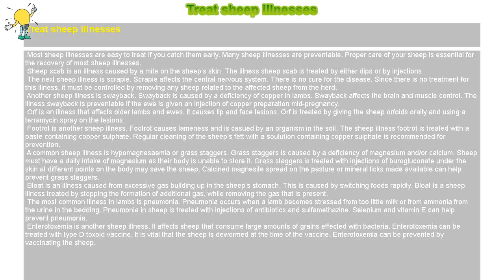A common sheep illness is hypomagnesemia, or grass staggers. Grass staggers is caused by a deficiency of magnesium and/or calcium. Sheep must have a daily intake of magnesium as their body is unable to store it.